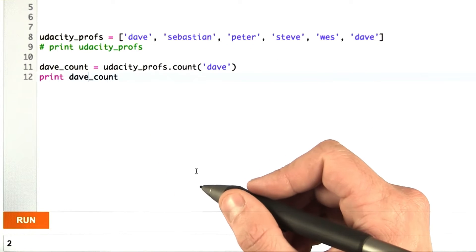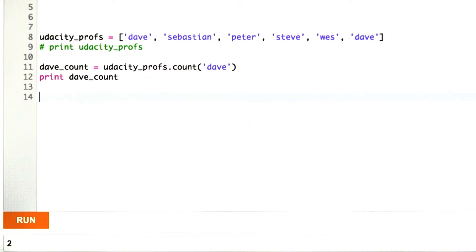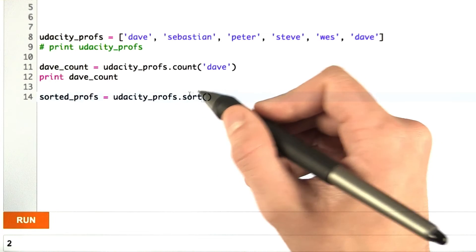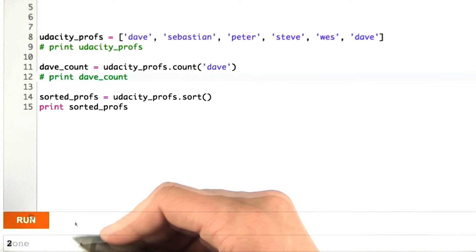Okay, now let's see what happens when we sort this list. We'll define a new variable called sortedProfs and set it equal to UdacityProfs.sort(). When I print sortedProfs, I get none. Wait, what happened here?